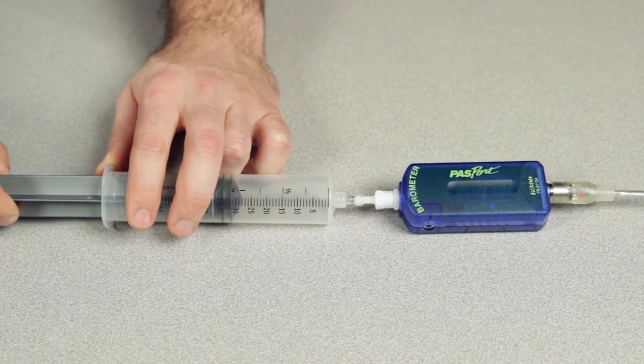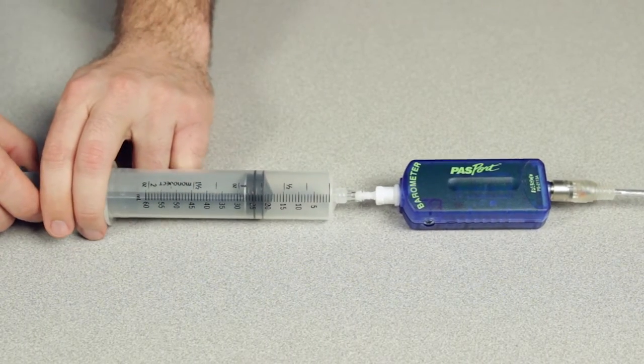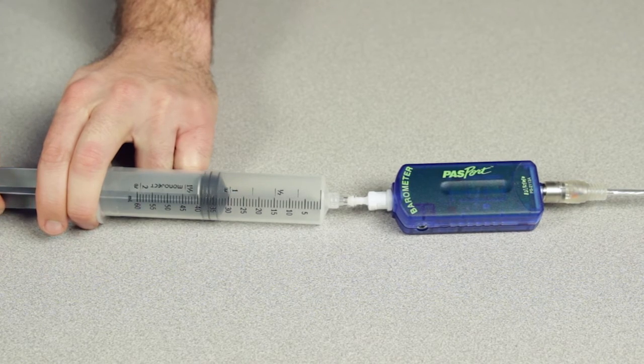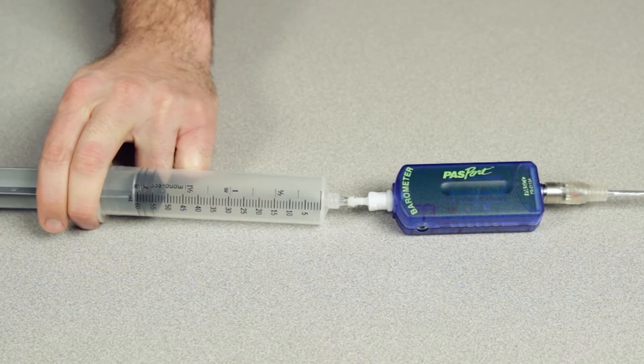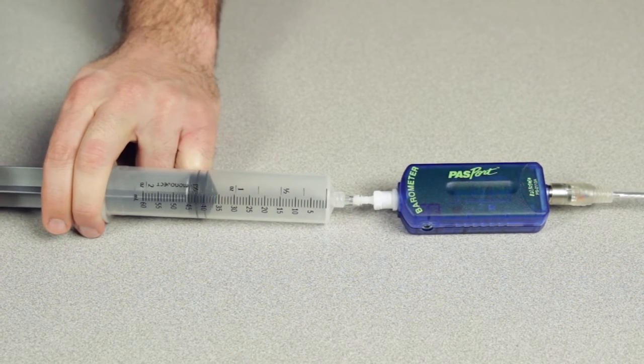When using the barometer low pressure sensor, do not subject the sensor to pressure in excess of 115 kilopascals, nor allow water to enter the sensor's pressure port. Both of these will permanently damage the sensor.